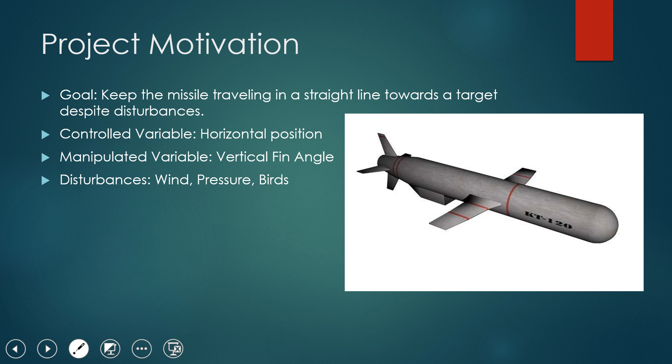And so to control that, we're using the manipulated variable of vertical fin angle. So we're changing that fin position at the back of the missile. And then we're accounting for disturbances, such as wind, changes in air pressure, and maybe even birds that it hits along the way.